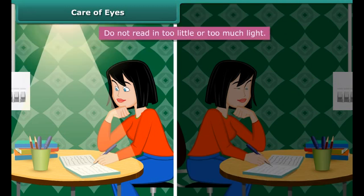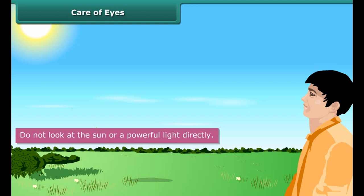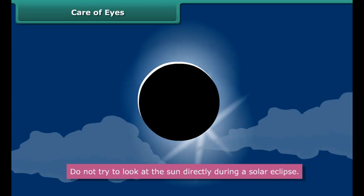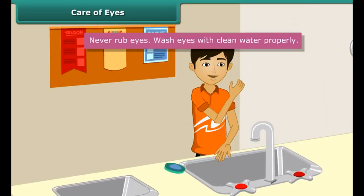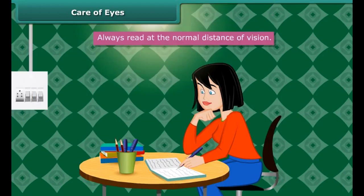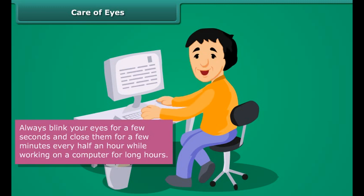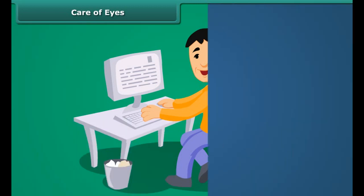Eyes are delicate and precious, so it is necessary to take proper care of our eyes. Do not read in too little or too much light. Do not look at the sun or a powerful light directly. Do not try to look at the sun directly during a solar eclipse.